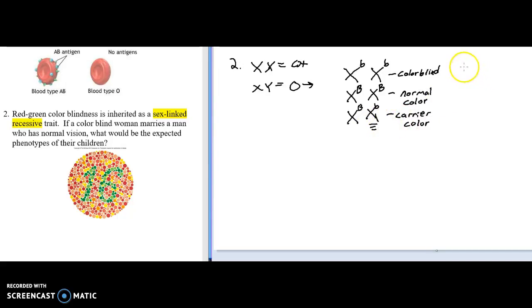Guys. Simpler with guys. If a guy is colorblind, he has an X with a little b and a Y chromosome. Y says male. X says sex-linked trait. A normal male is going to be big B on his X and then a Y. That's it. There are no carrier men. It's not possible for a man to be a carrier of a sex-linked trait. Either he has it and expresses it or he does not.